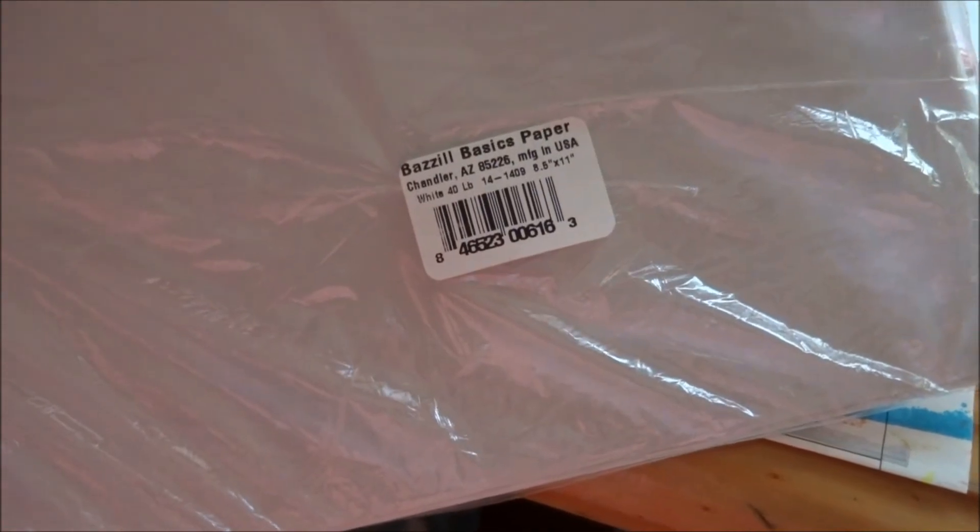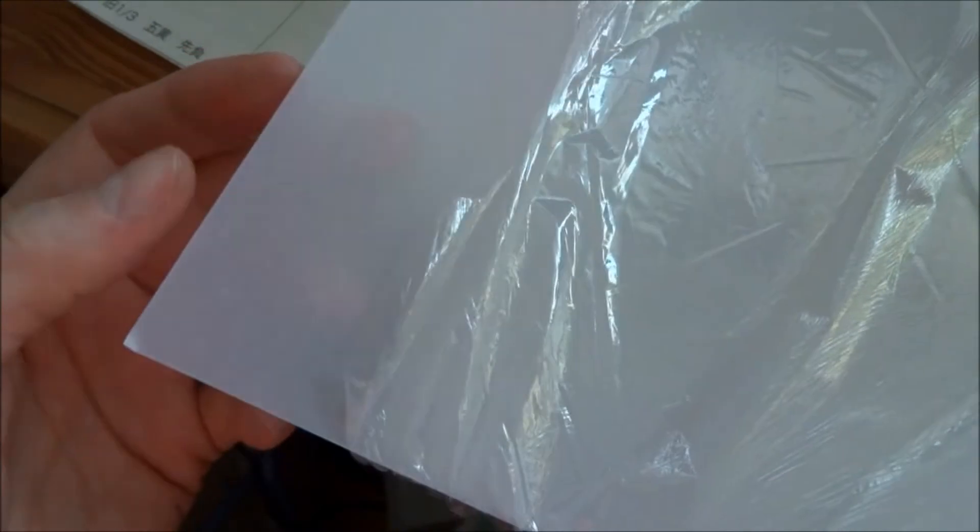And then I also got - whoops - I got this one. It's from Basil. It's the really thick 40-pound vellum sheet, and I'll just share how thick it is. Look, this is one sheet and it's really, really thick, so I'm really excited to use that on my cards.